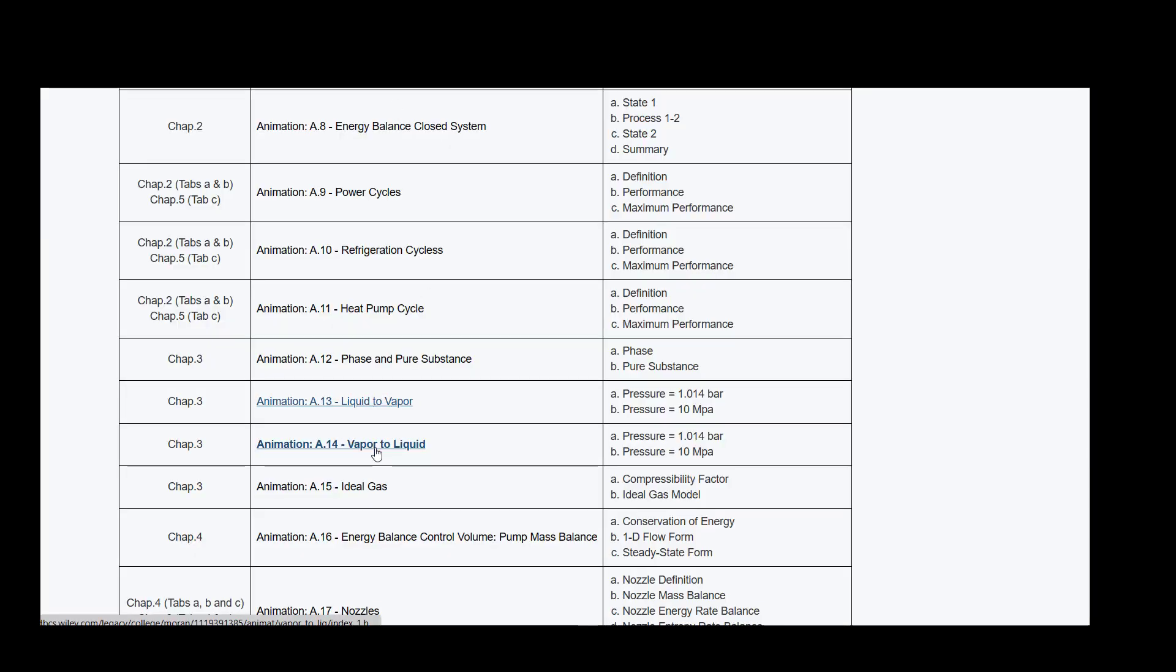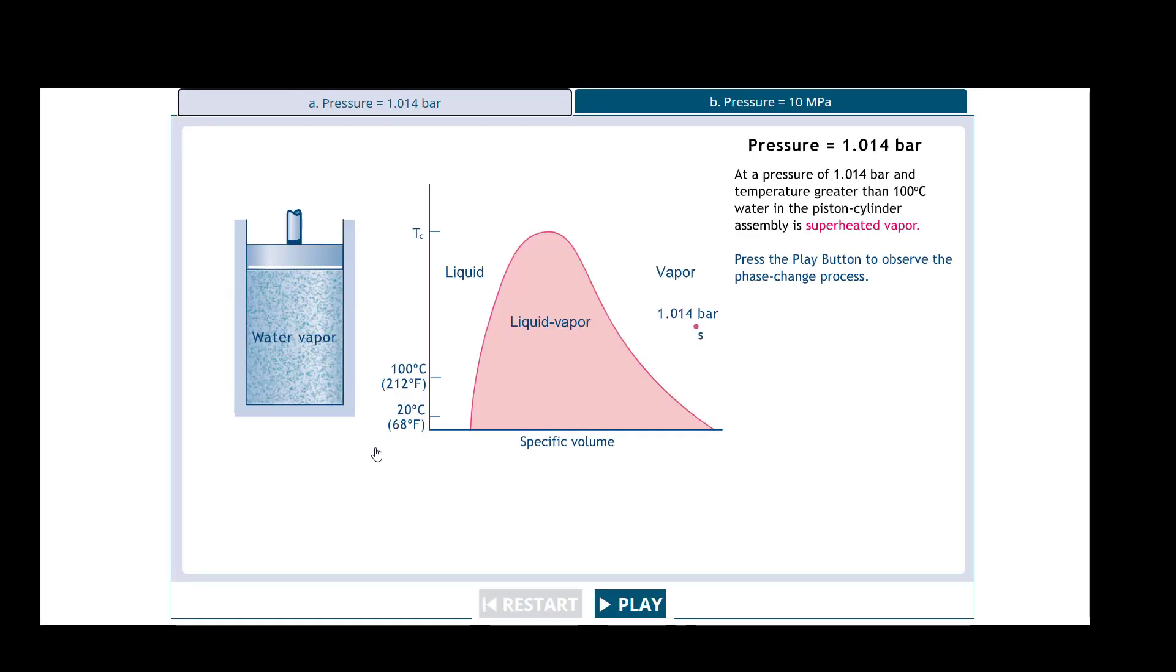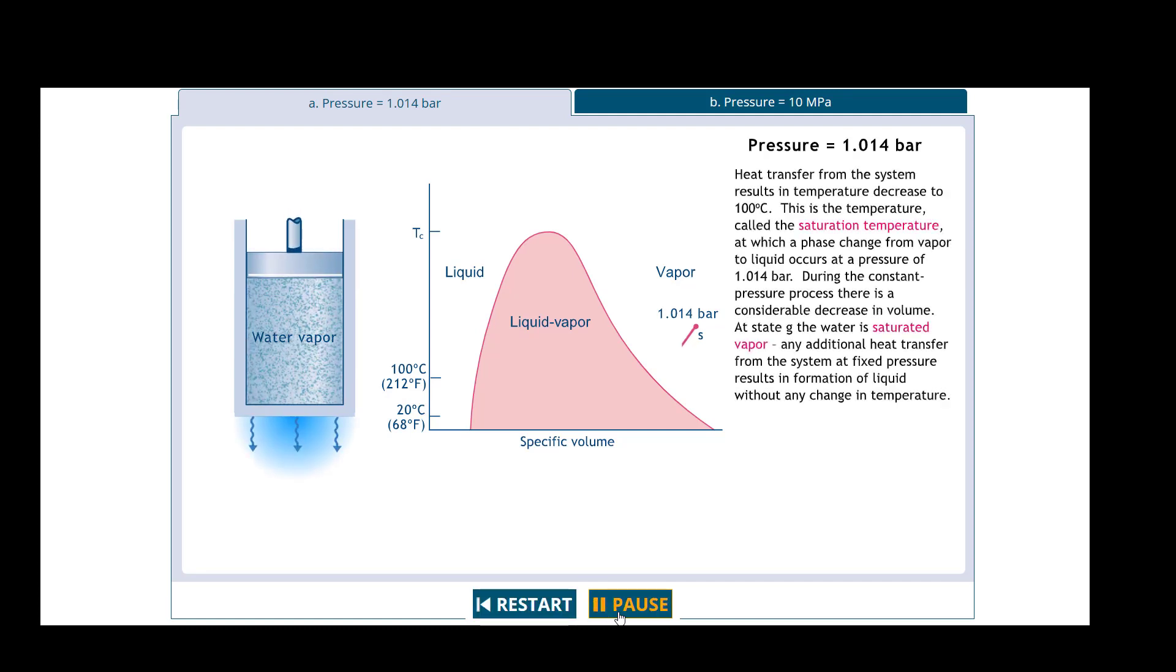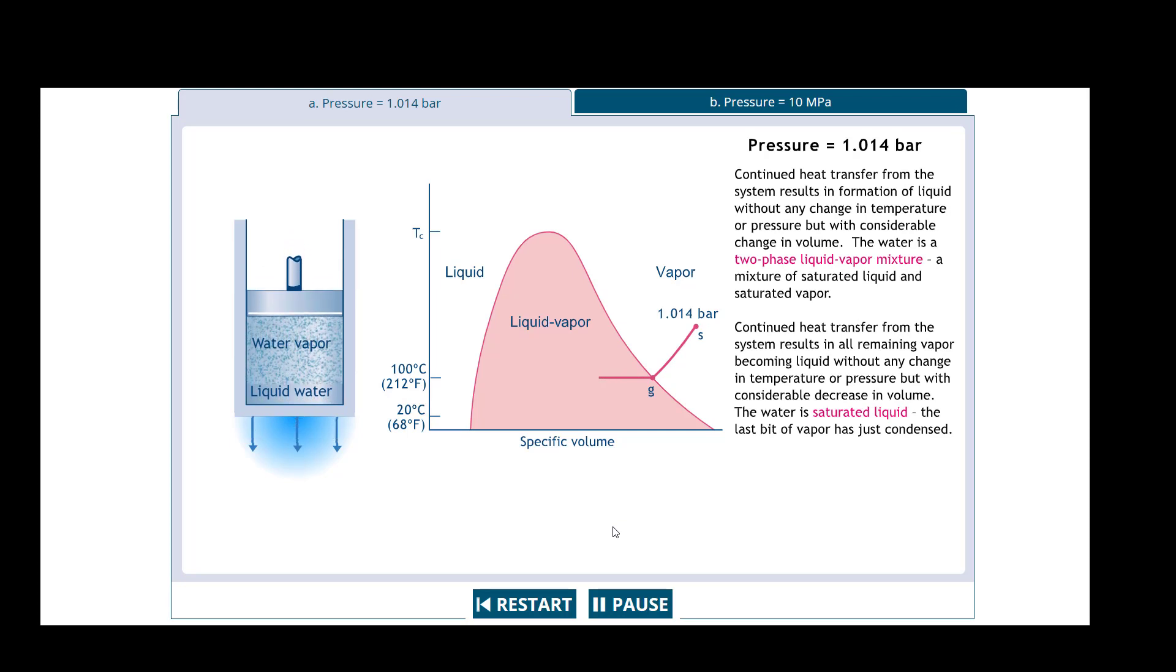Let's go into vapor to liquid. We went liquid to vapor, let's do some cooling, some vapor to liquid. You see we are all starting at vapor. This is at a pressure of 1.014 bar and then we're going to do the same thing again at 10 megapascals. We're starting over here in the superheated vapor region. We are cooling down, we've got some compression going. Now we've made it to the vapor line, we're going to see this two-phase mixture and we're going to see the quality. The quality is decreasing because the amount of vapor is decreasing.